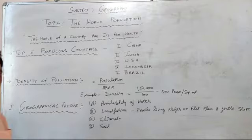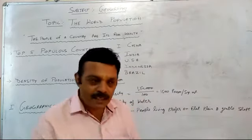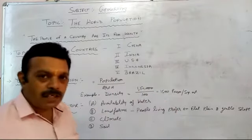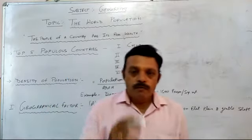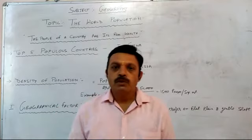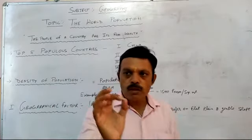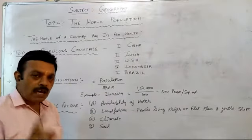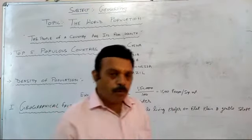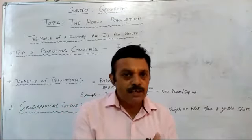Now we discuss about the geographical factors — what are the geographical factors which directly affect population growth, or which factors increase the population growth? The first factor is landforms. Landforms are an important factor; population growth is directly affected by landforms. Every person wants to live and settle in better landforms. Generally, people prefer to live in flat and gentle slope landforms. Landforms is the main factor of population density.